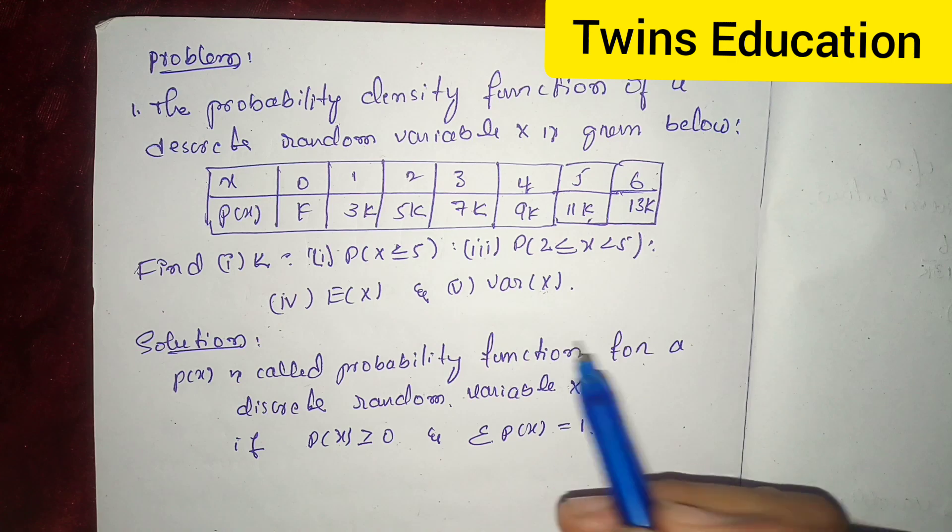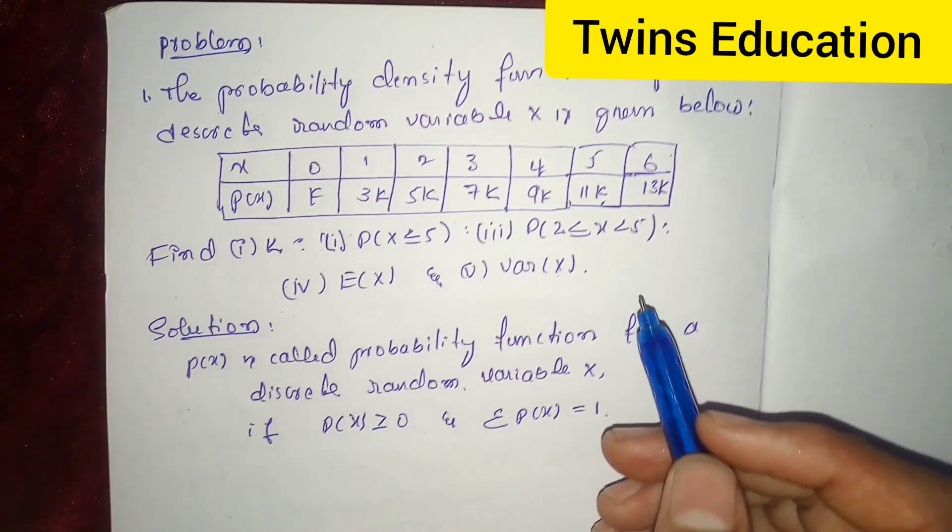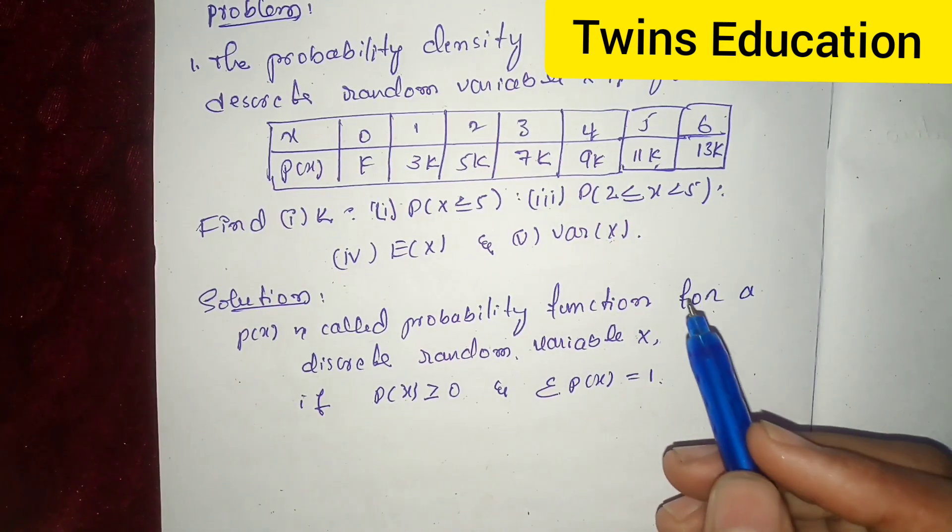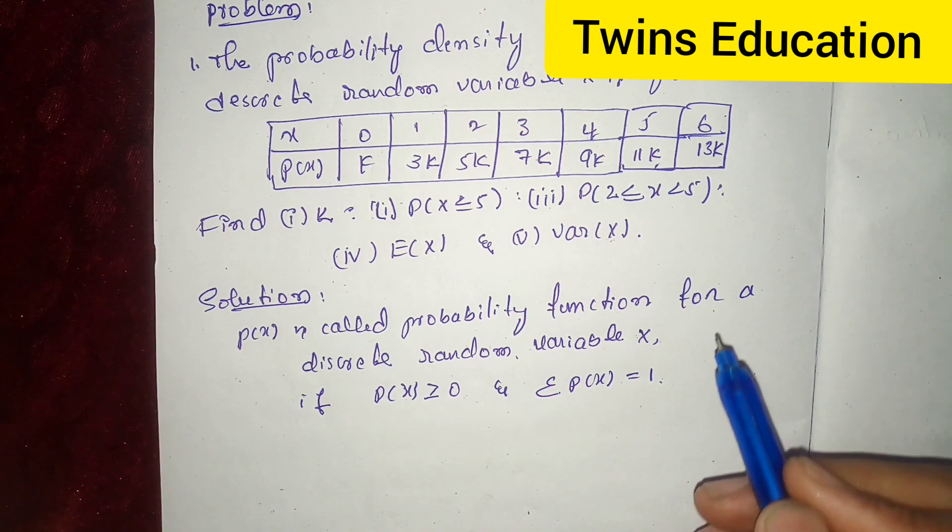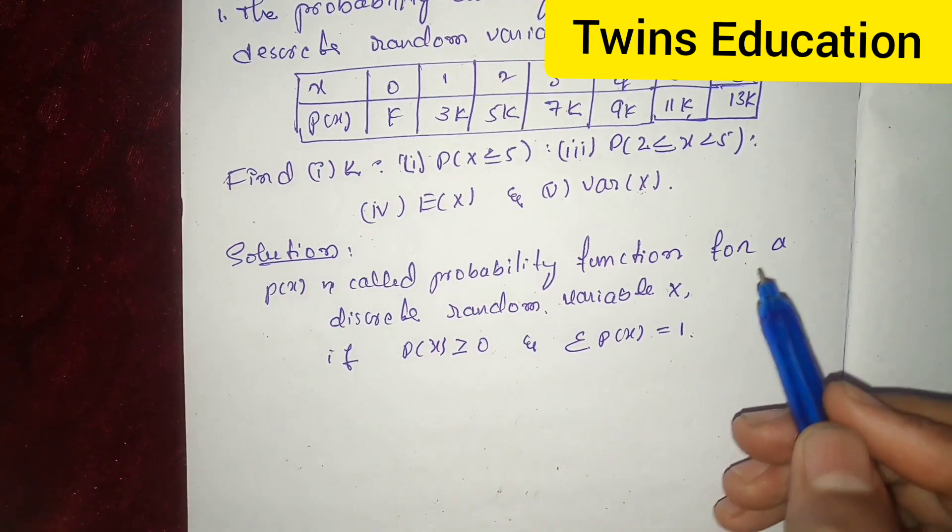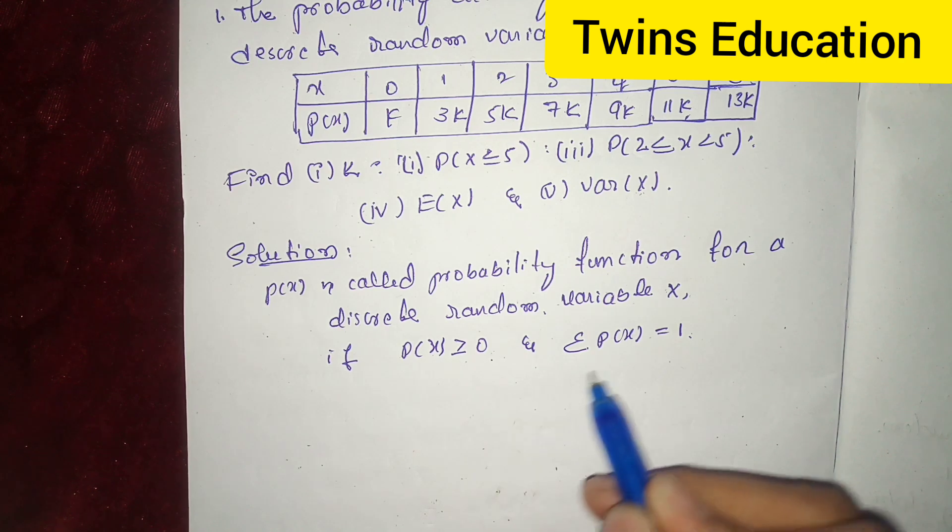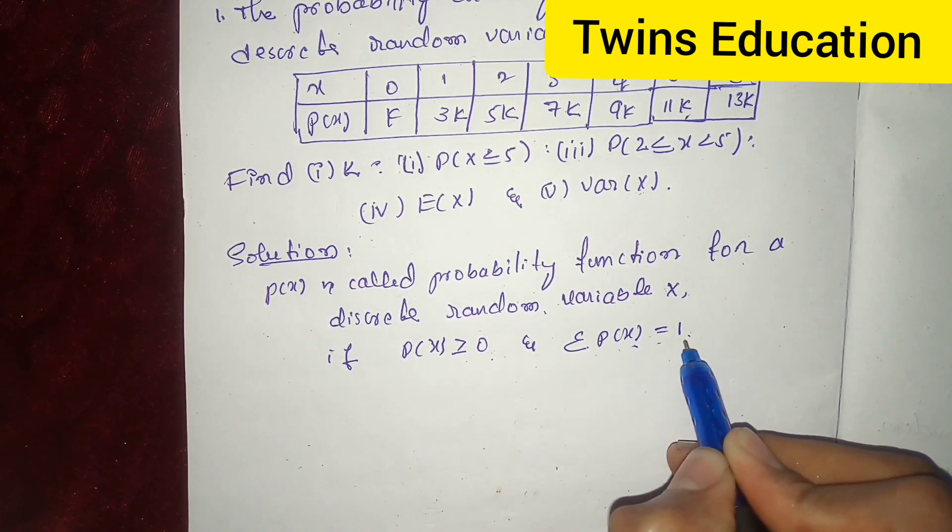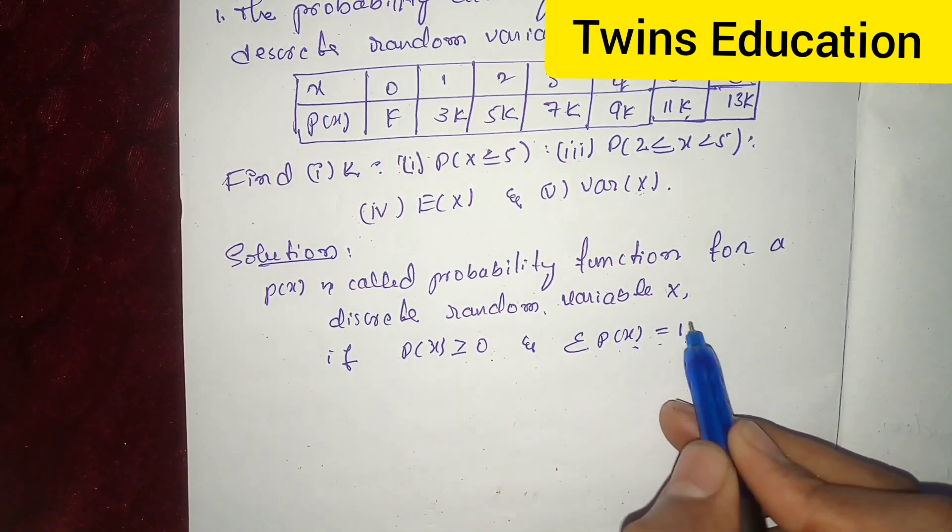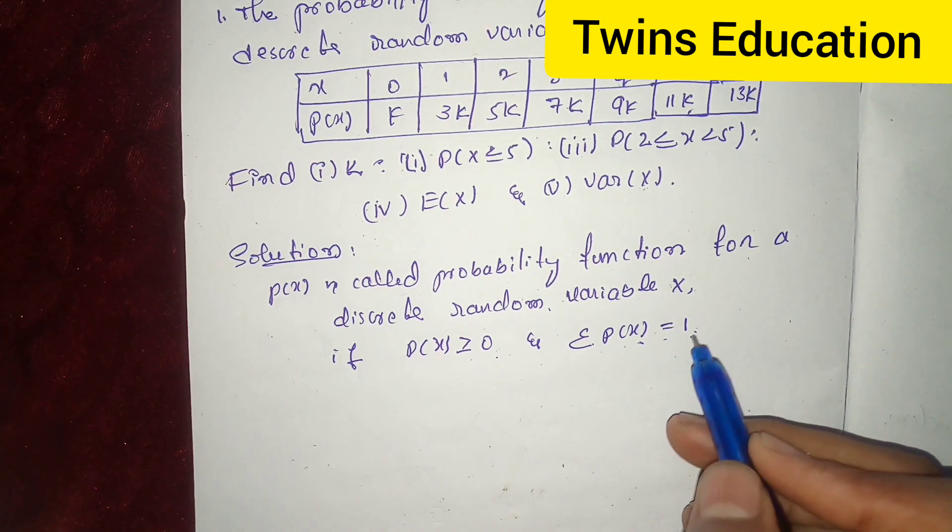Probability density function. What is probability density function? p of x is called probability function for a discrete random variable x if p of x is greater than or equal to 0 or summation of p of x is equal to 1. By using these two conditions, we will solve the problems.